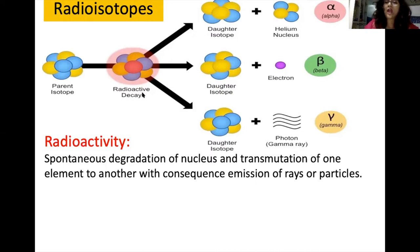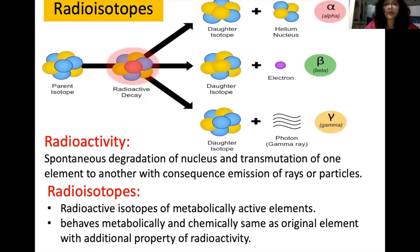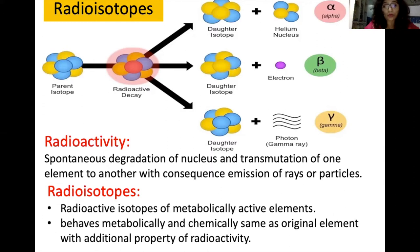Radioactive isotopes, though radioactive, behave the same as metabolically active elements. For example, radioactive iodine behaves the same as non-radioactive iodine. So they behave metabolically and chemically the same as the original element, with the additional property of radioactivity. We utilize both this radioactivity and their normal chemical and metabolic behavior in medical practice.